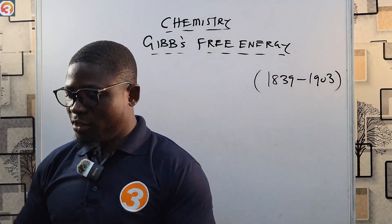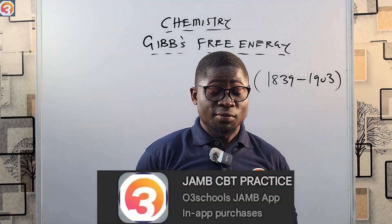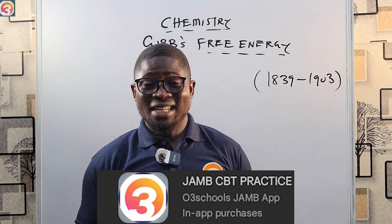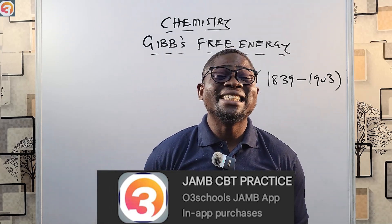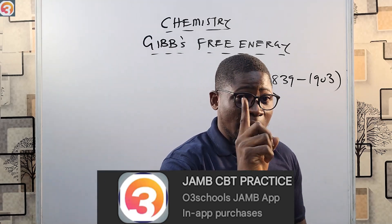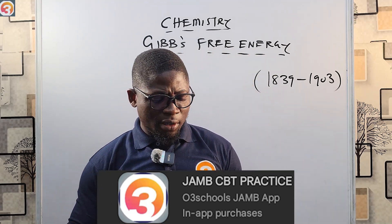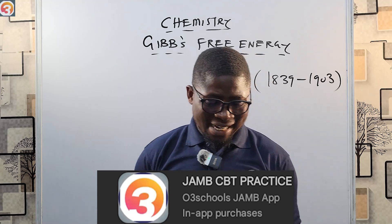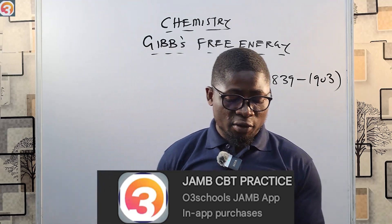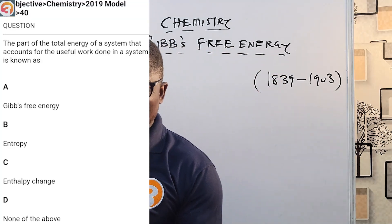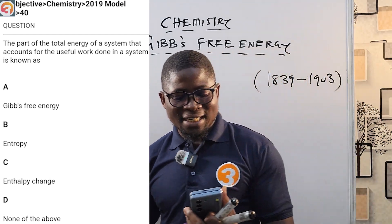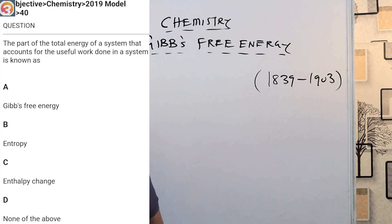Before we begin, as usual, let us look at a question from the O3 School JAM app. These videos are sponsored by the JAM app. This is a 2019 question, number 40. It says: the part of the total energy of a system that accounts for the useful work done in the system is known as what?